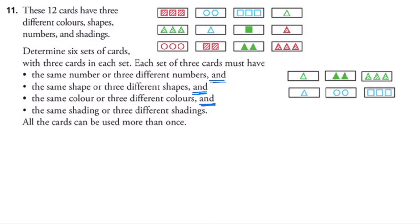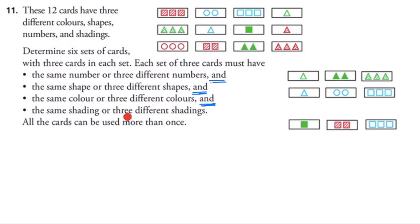Now let's build a set with different colors, requiring three different colors. I'll choose a shape — let's say a square. I have one square, two squares, three squares. Checking: all the same shape, three different colors, three different numbers, and three different shadings — solid, striped, and clear. These three cards fit all four attributes.